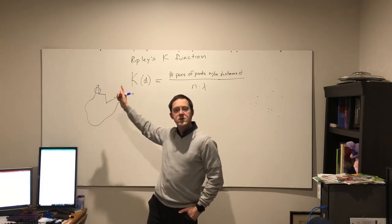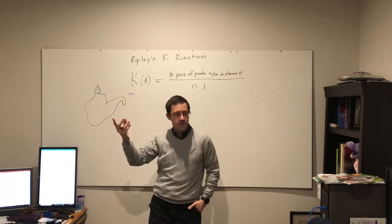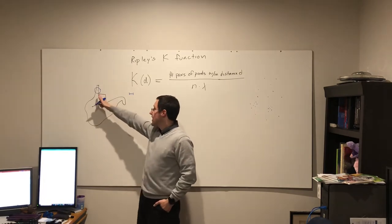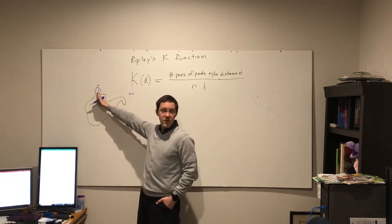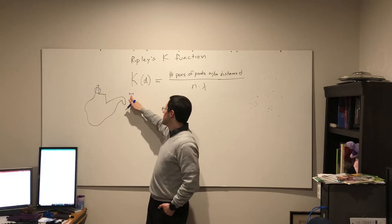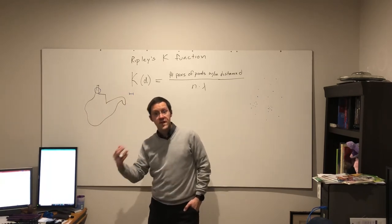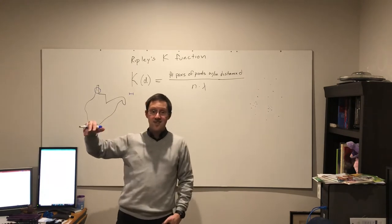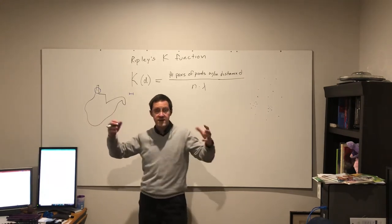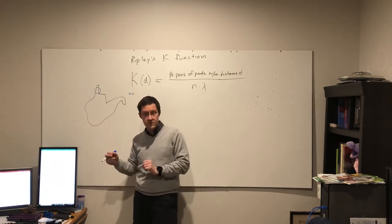If my distance is d and I have a point here in the Northern Panhandle, the expected number of points if they were randomly distributed is not easy to do because part of that distance crosses the state boundary, leaves the state.